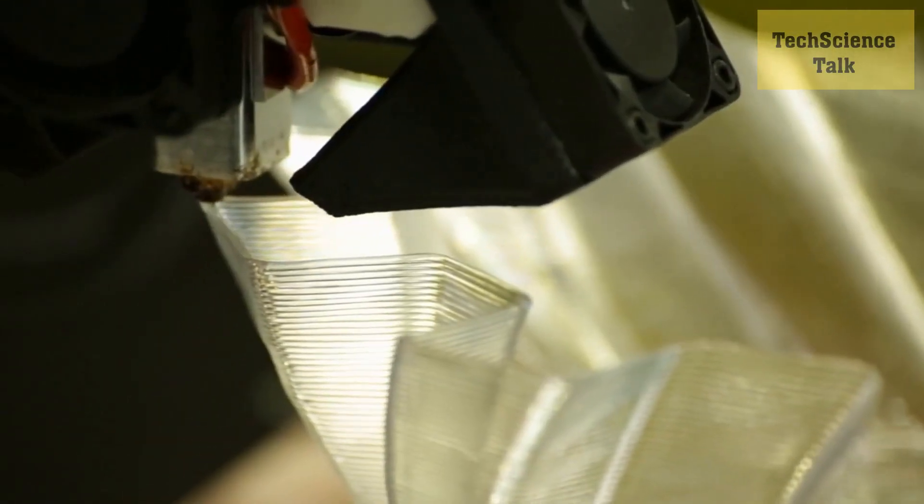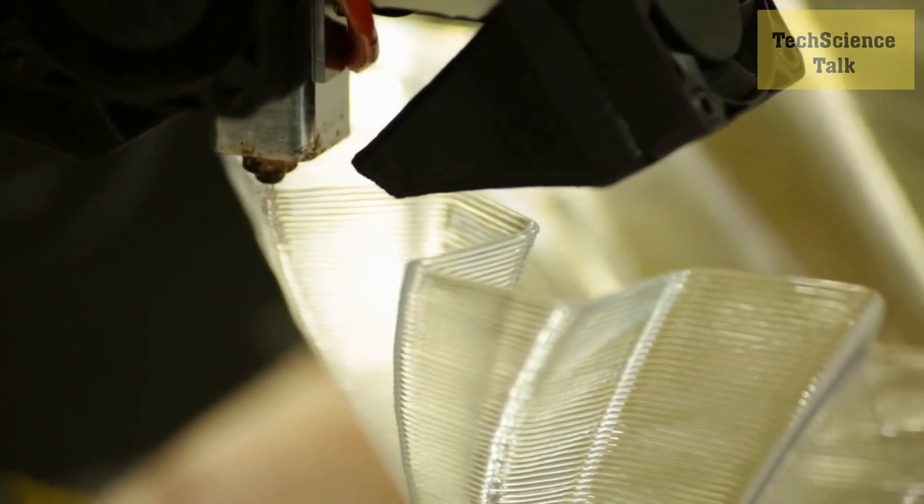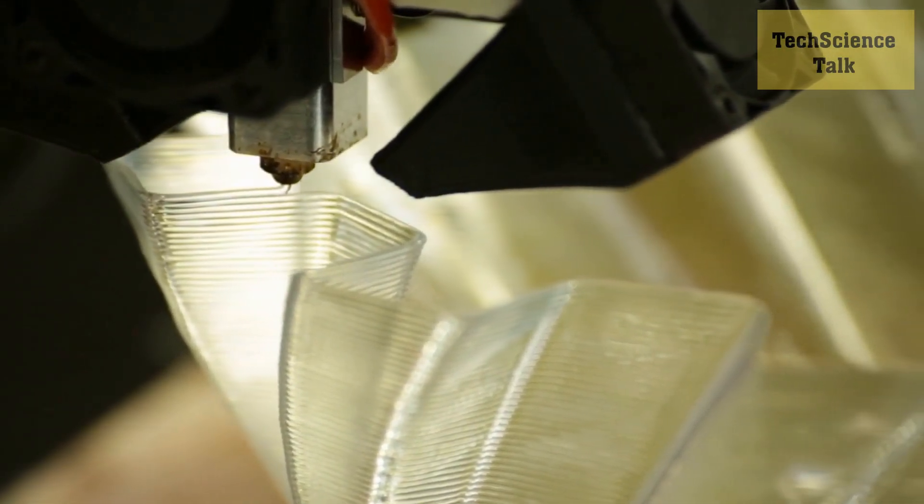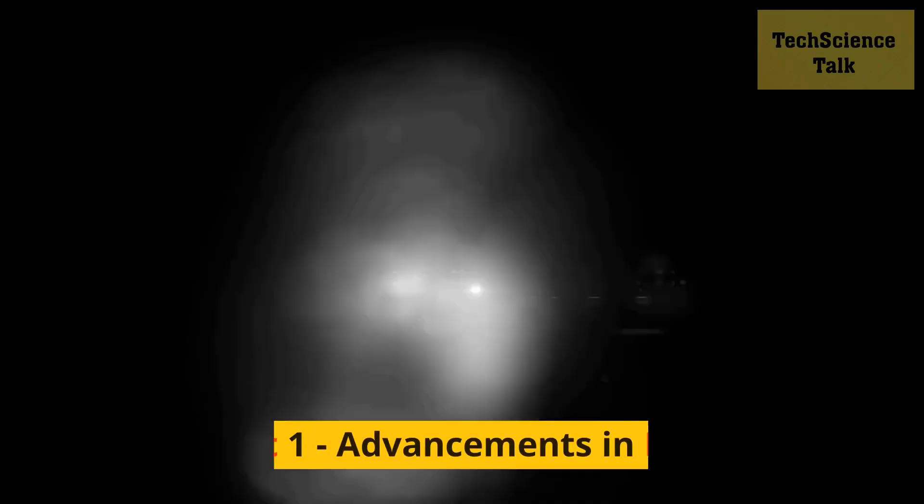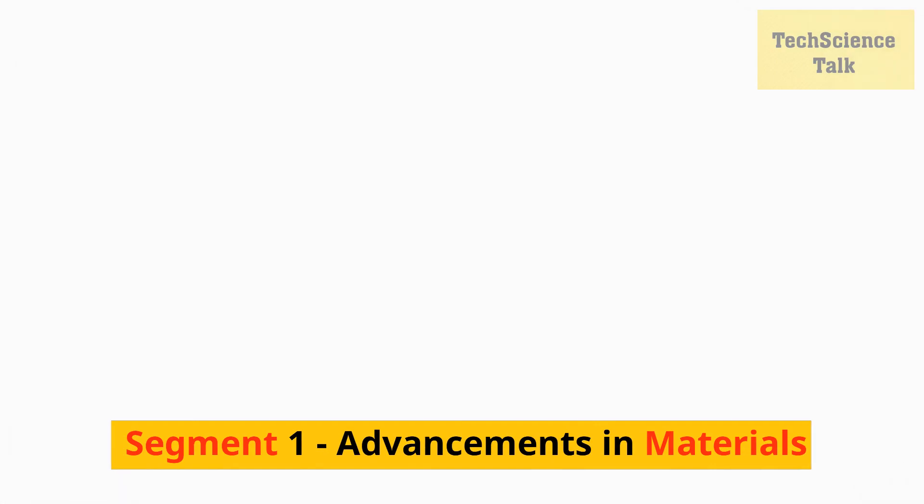Additive manufacturing is the broader category that encompasses all the technologies used to build objects by adding material layer by layer. Segment 1: Advancements in Materials. The first major advancement we're going to cover is the development of new materials.